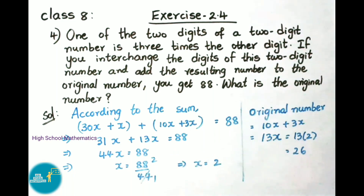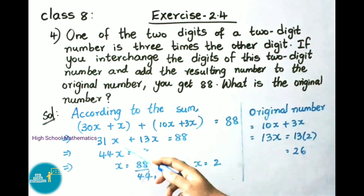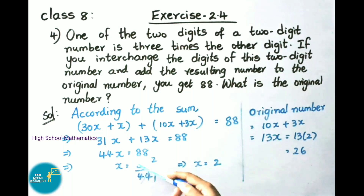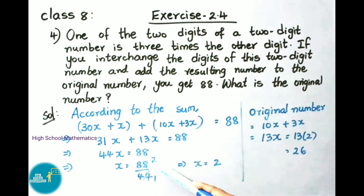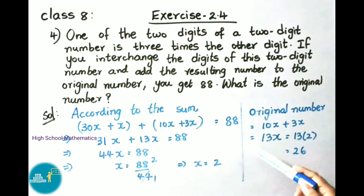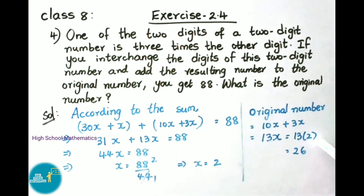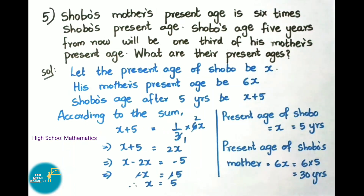Simplifying: 31x + 13x = 44x = 88. That implies x = 88 ÷ 44 = 2. Now let us find the original number: 10x + 3x = 13x = 13 × 2 = 26. Therefore the original number is 26.